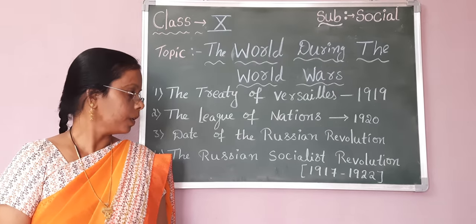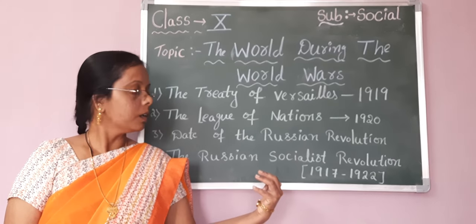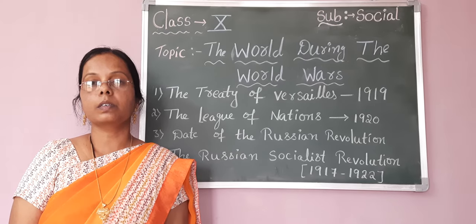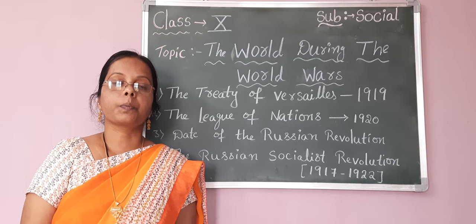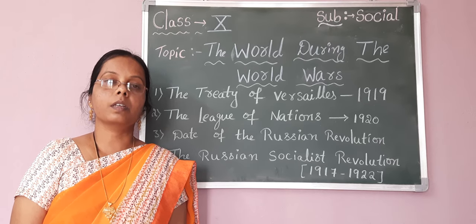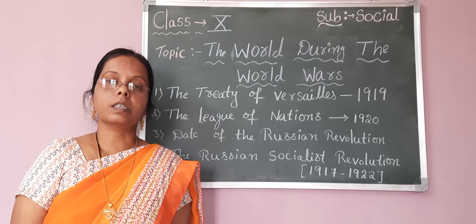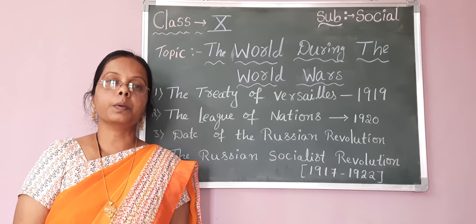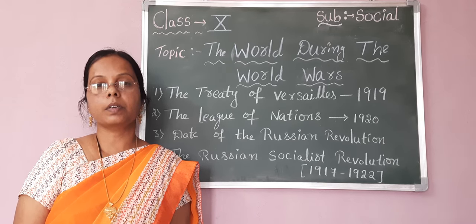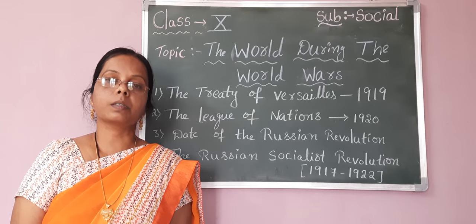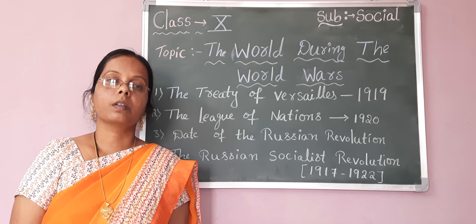The next topic is the Russian Socialist Revolution, which happened in the year 1917 and lasted until 1922. Russia withdrew from the First World War in 1917 due to the internal revolution in the country. Russia is one of the largest countries and it spreads into two continents — Europe and Asia — so it is called a Euro-Asian power. It had a population of around 156 million, and the people's occupation was mostly farming — meaning most of the people were farmers.